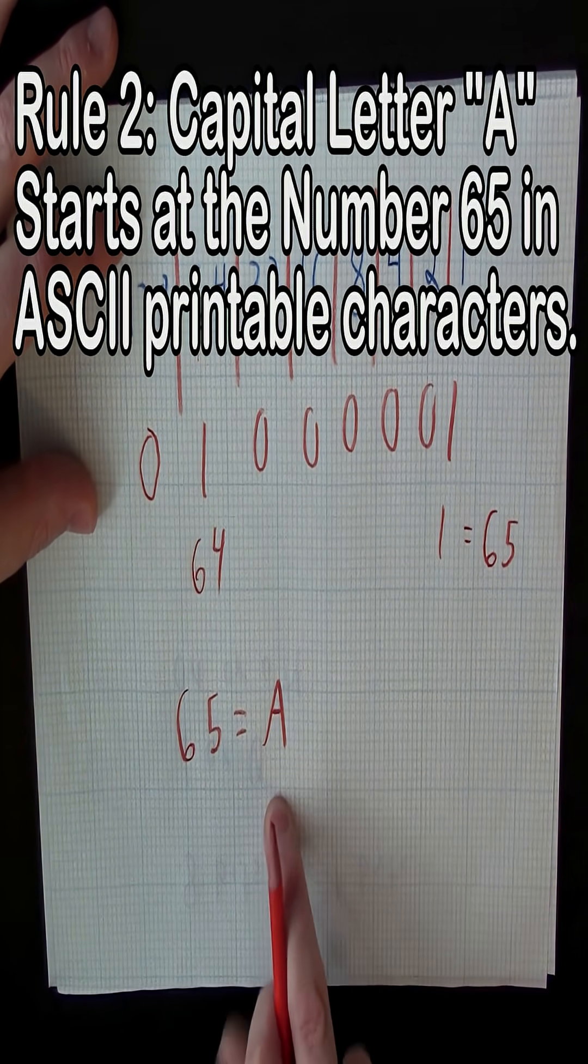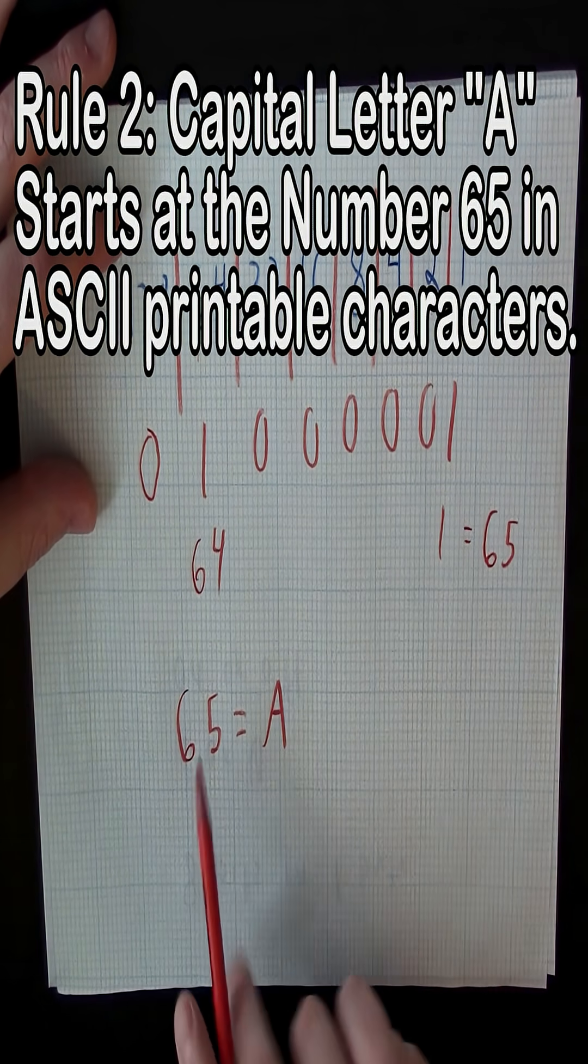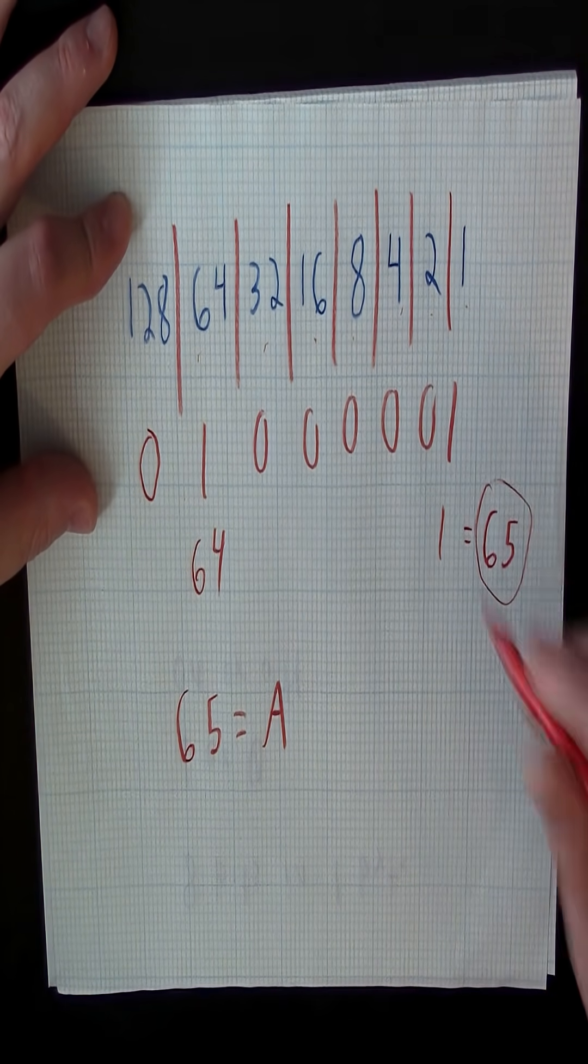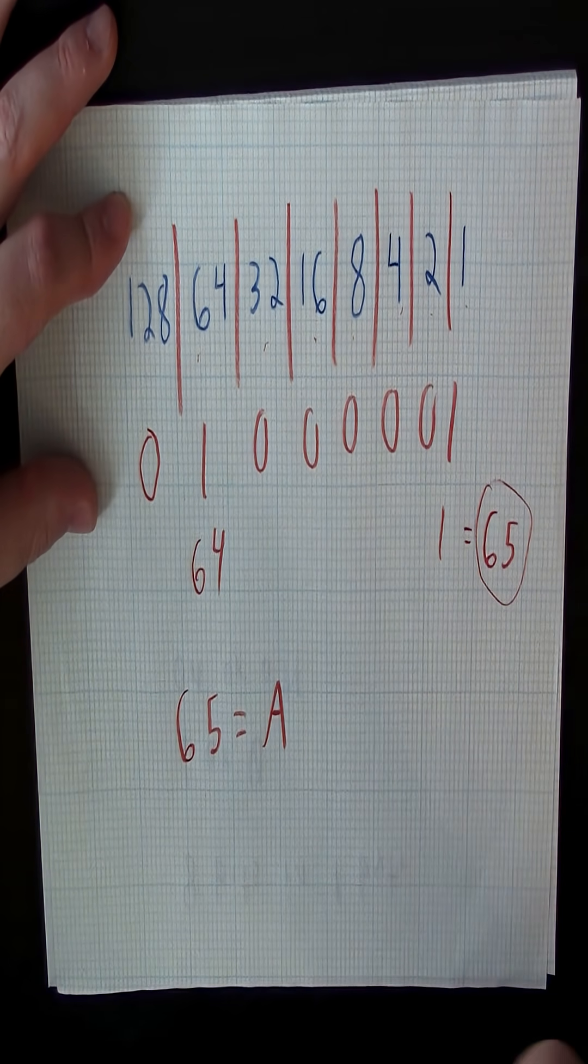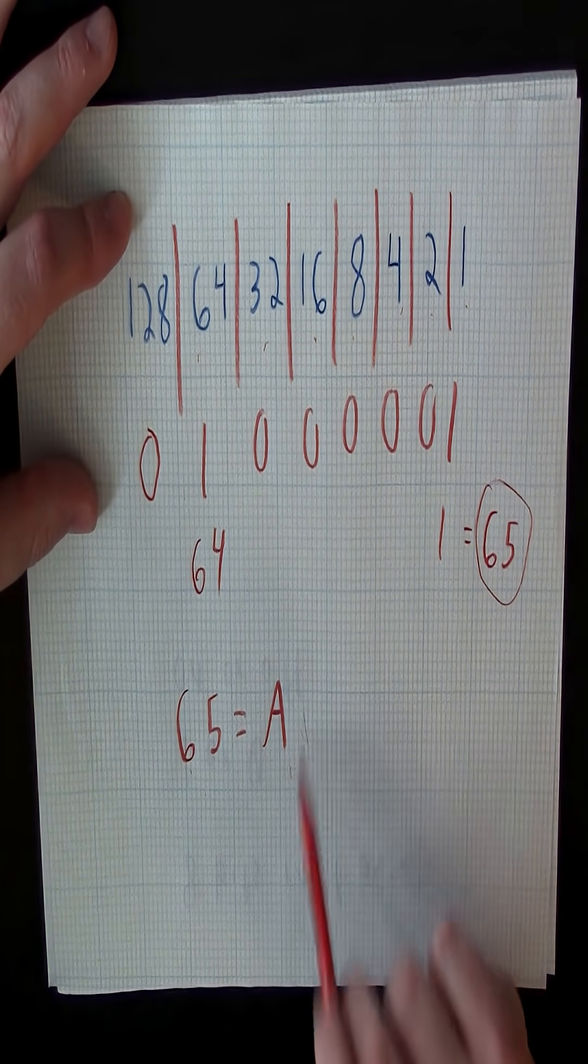So that is the second rule we need to remember: to add the ones, and that will give you a number. And I'm going to explain why that is in just a moment here. And that 65 equals A.